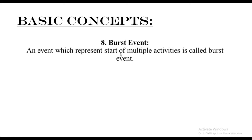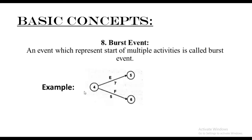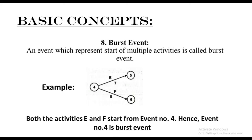Next we have the burst event. An event which represents the start of multiple activities is called the burst event — the exact opposite of the merger event. From a single event, when two or more activities burst out, that is the burst event. For example, both activities E and F start from event number four, hence event number four is called the burst event.